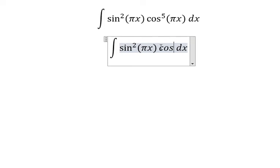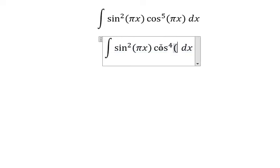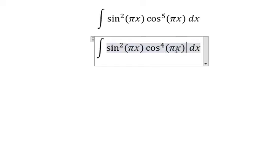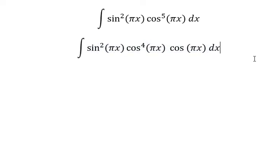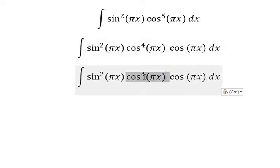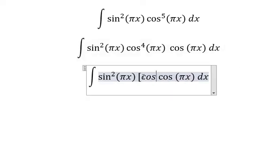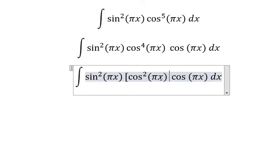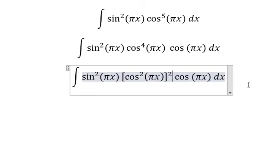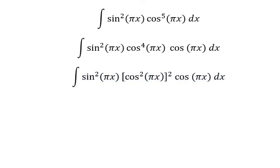We can write cosine bx to the power of five into cosine bx to the power of four multiplied by cosine bx. Next, cosine bx to the power of four we can write into cosine bx squared, everything to the power of two. Now we have the formula in here.